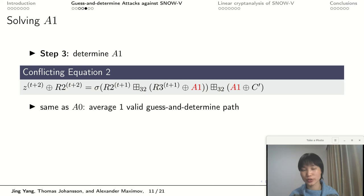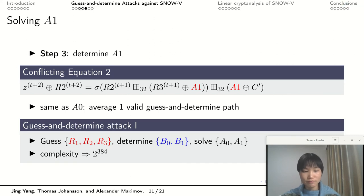Our last step is to determine the value of A1. Luckily, we can find another conflicting equation for A1 as shown in the block. We can see it has quite a similar form to the equation for A0, and we can use the same way to derive the solutions of A1. The results are the same: there is on average 1 valid guess-and-determine path. In our first guess-and-determine attack, we guess the values of R1, R2, and R3, determine the values of B0 and B1, and solve A0 and A1 using the 10-step algorithm with little complexity. The total complexity is 2 to the power of 384.